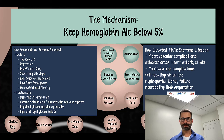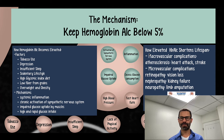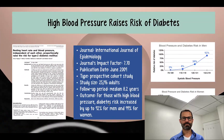We're in the mechanisms section for the recommendation to keep hemoglobin A1C below 5%. Let's take a look at the effect of high blood pressure.